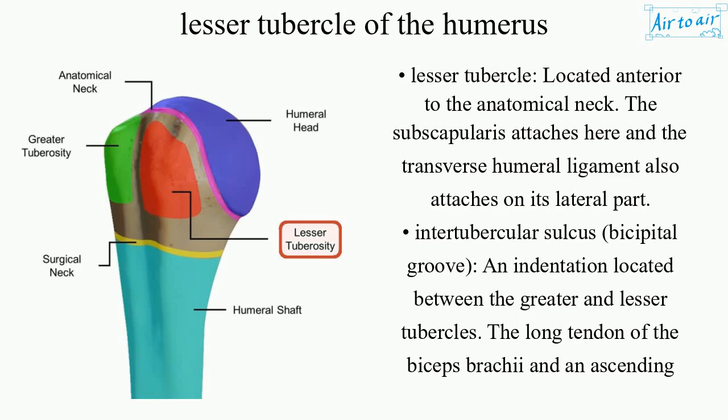Lesser tubercle, located anterior to the anatomical neck. The subscapularis attaches here, and the transverse humeral ligament also attaches on its lateral part.